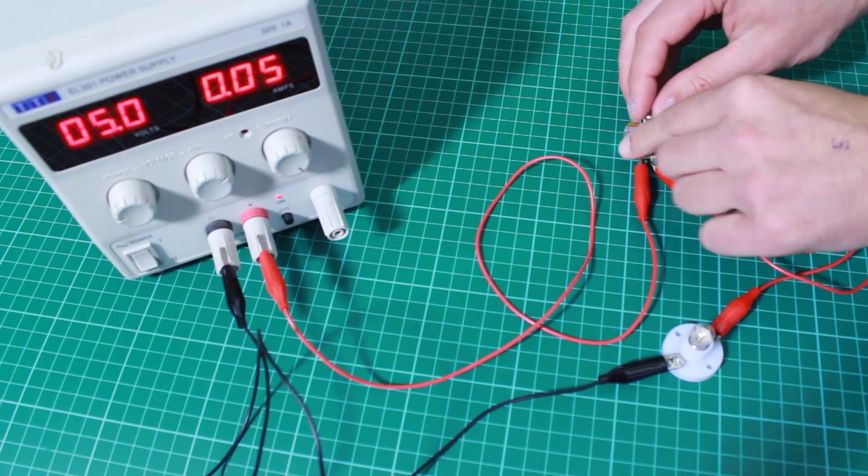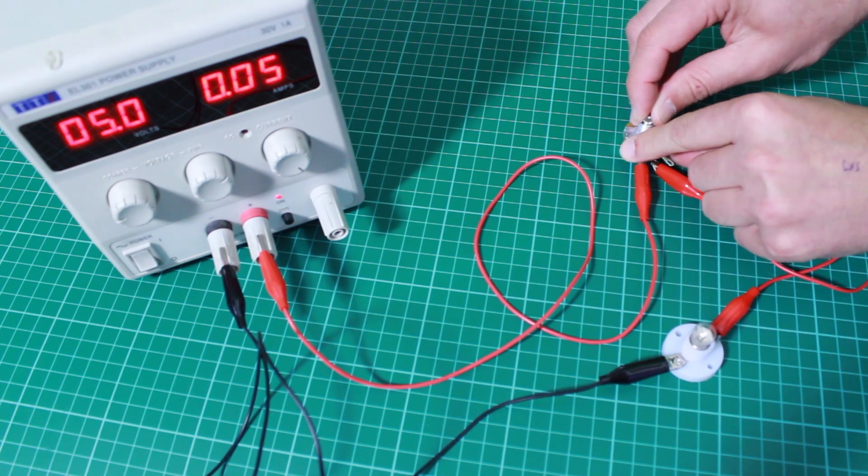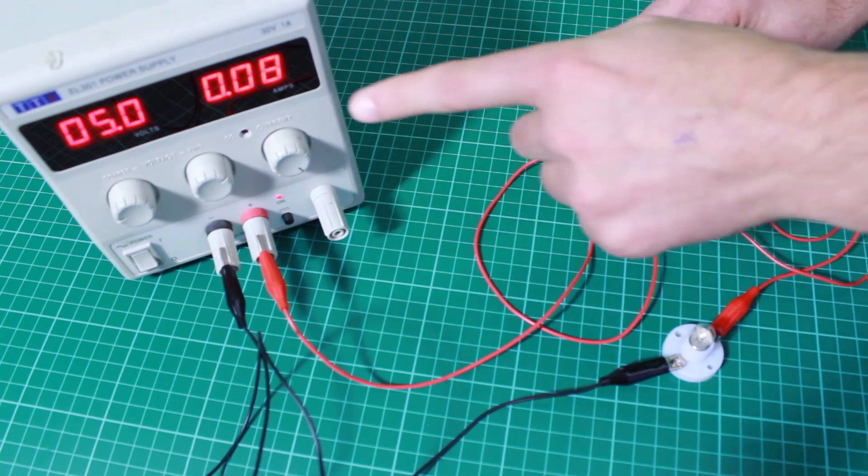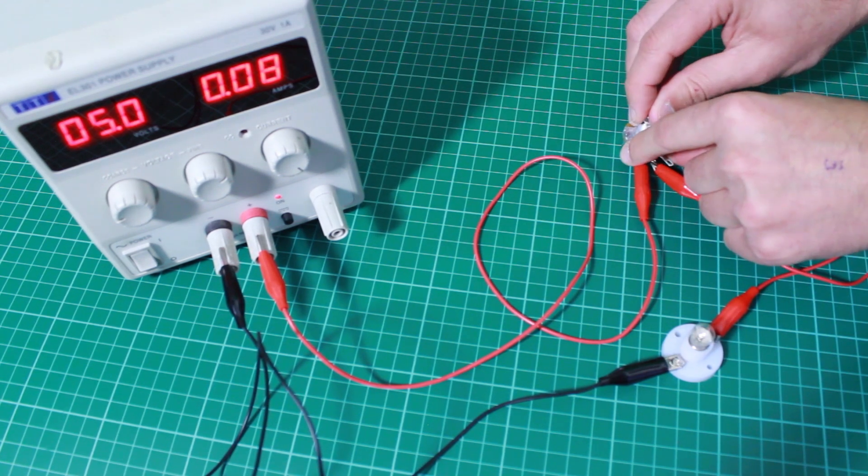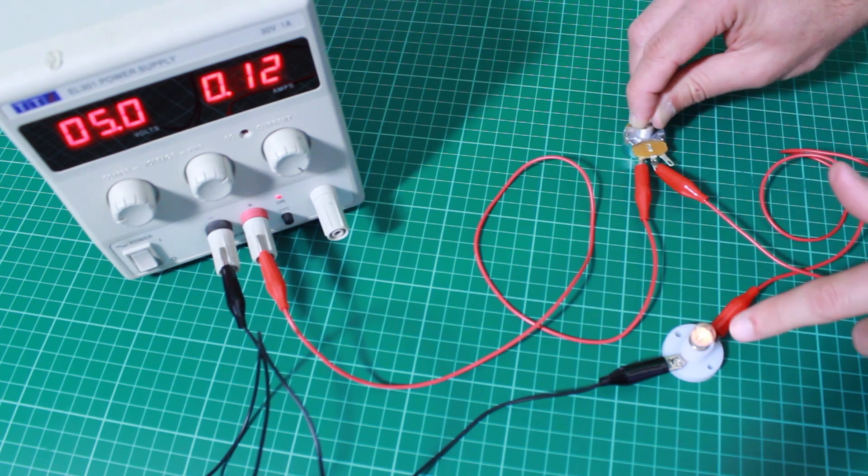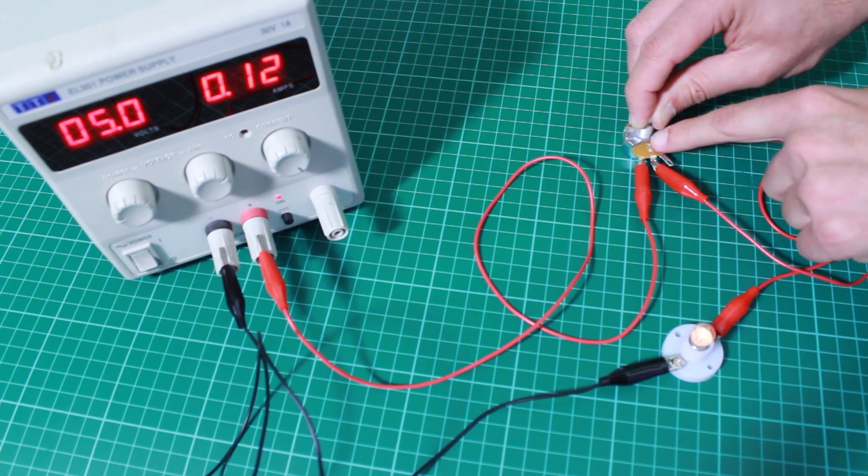But now if I lower this resistance we can see that more current is starting to flow through the circuit and as more current flows the bulb is starting to get brighter.